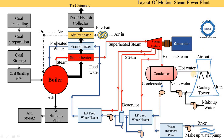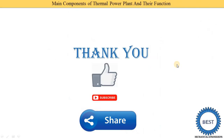This is the complete diagram of the modern steam power plant layout. We covered the coal and ash handling circuit, the air and flue gas circuit, the water and steam circuit — starting from the river through the LP feed water heater, deaerator, HP feed water heater, economizer, steam superheater, superheated steam, steam turbine, and exhaust — and finally the cooling water circuit. Thank you for watching. If you learned something, please like the video, subscribe to the channel, and share with your friends.